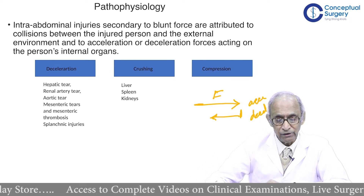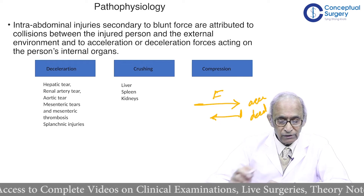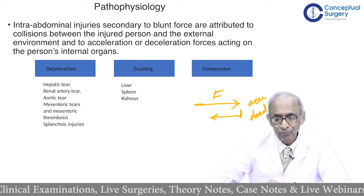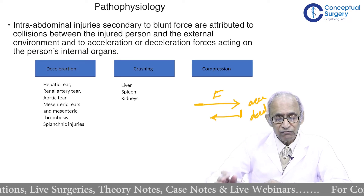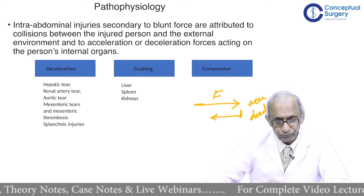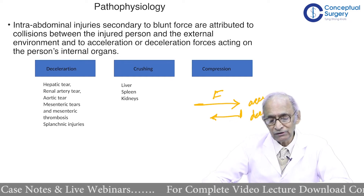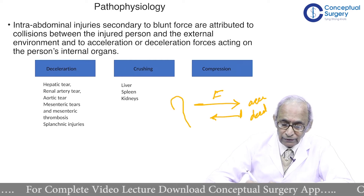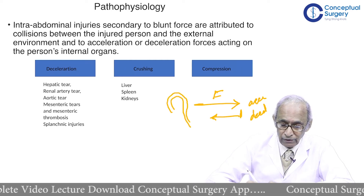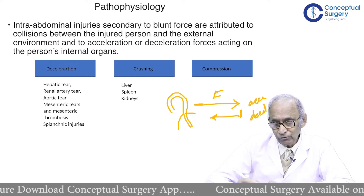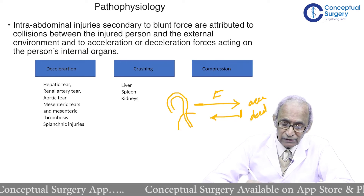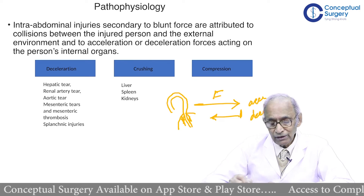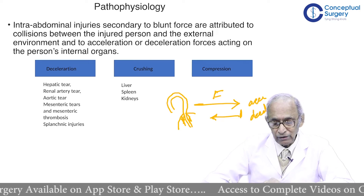These kinds of forces exert a lot of pressure on structures which are relatively fixed. For example, the liver is fixed by the falciform ligament. With sudden forward-backward movement, at the junction between a fixed and mobile area, there will be tears. Similarly, the arch of the aorta is relatively more mobile than the thoracic aorta, which passes through the diaphragm and into the abdomen — that region is almost fixed. When there is movement, there is a tendency to tear there, causing aortic ruptures.